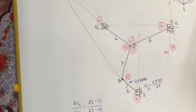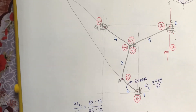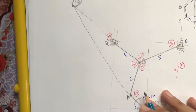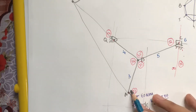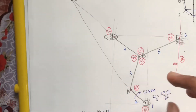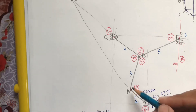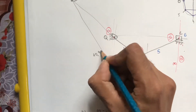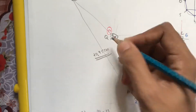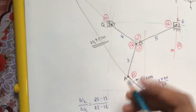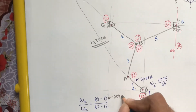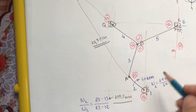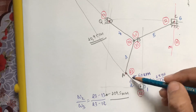Measure the distances: IC 2-3 to IC 1-3, and IC 2-3 to IC 1-2. Using scale 1:1, the distance from IC 2-3 to IC 1-3 is measured as 20.95 cm = 209.5 mm, and IC 1-2 (which is directly available) is 30 mm.